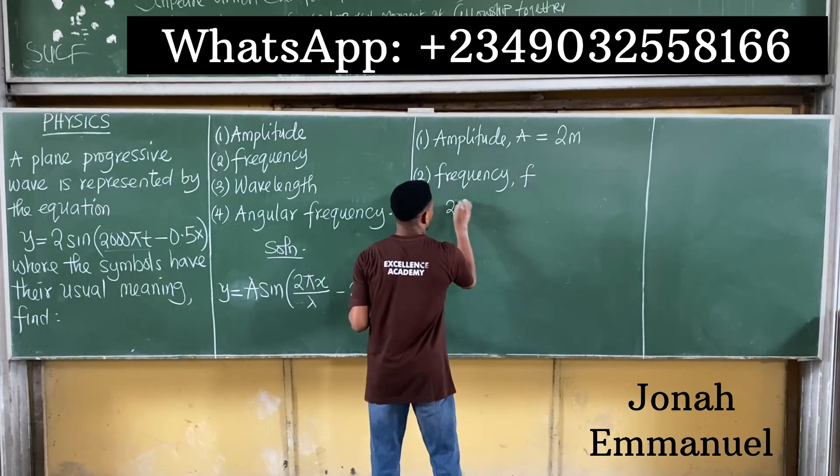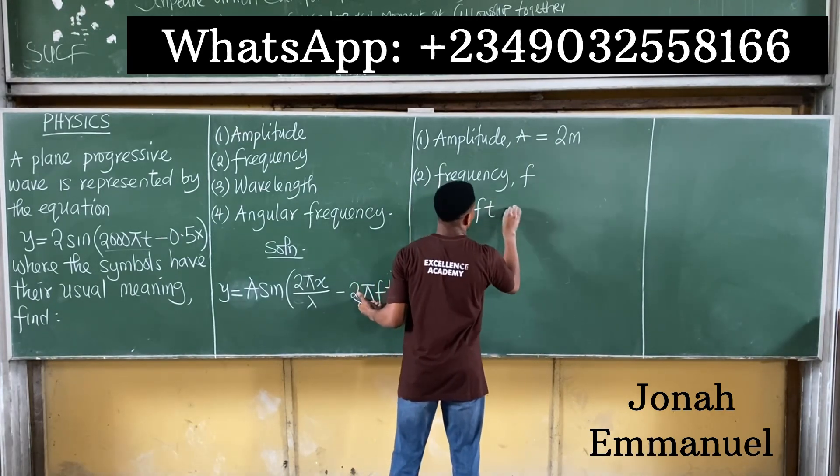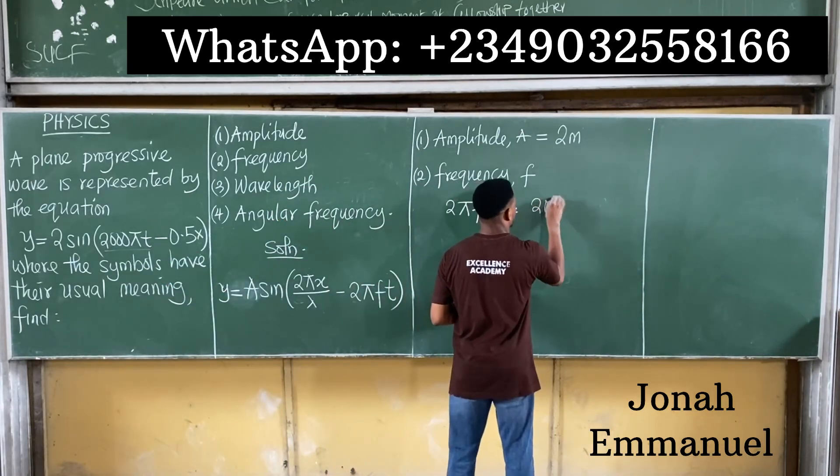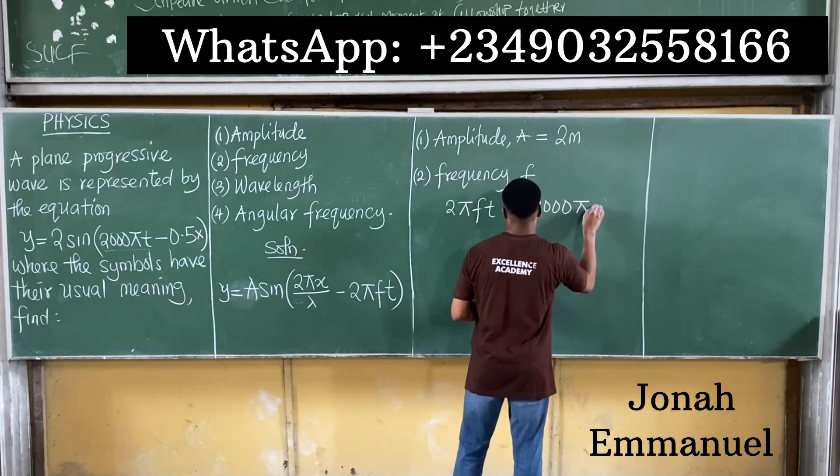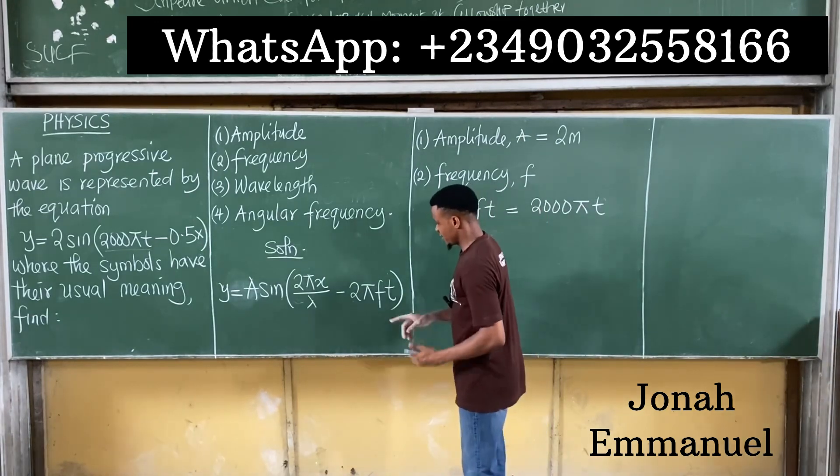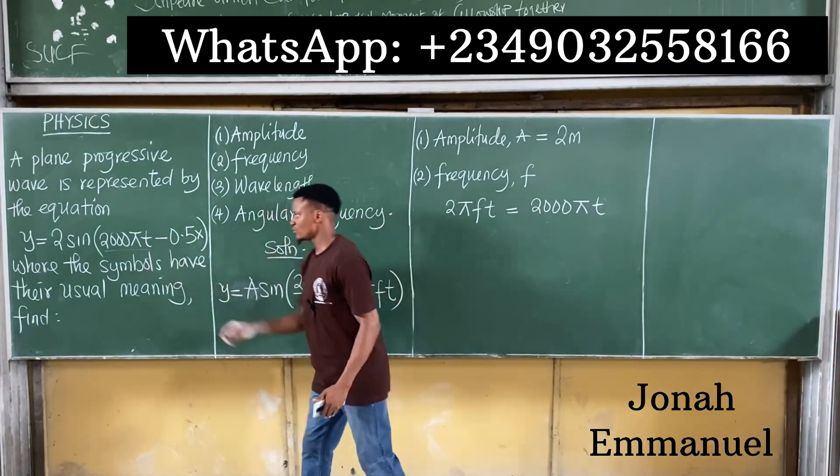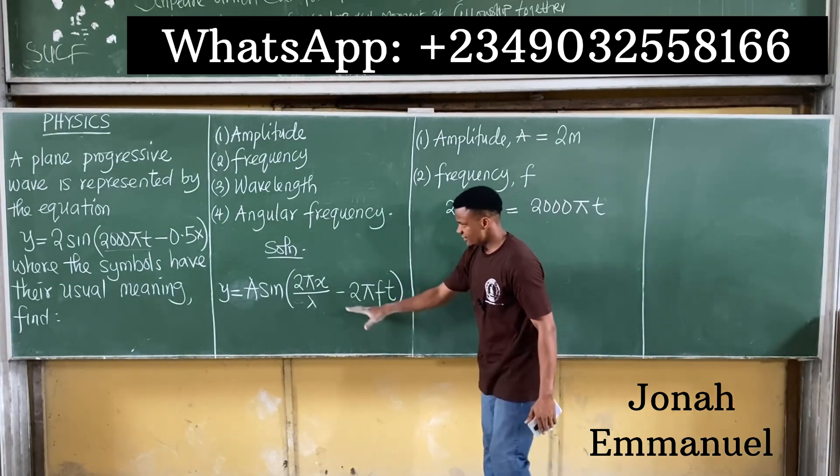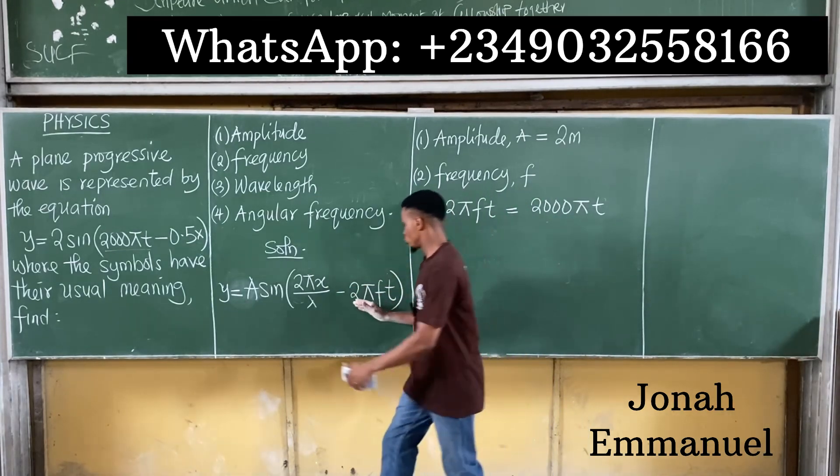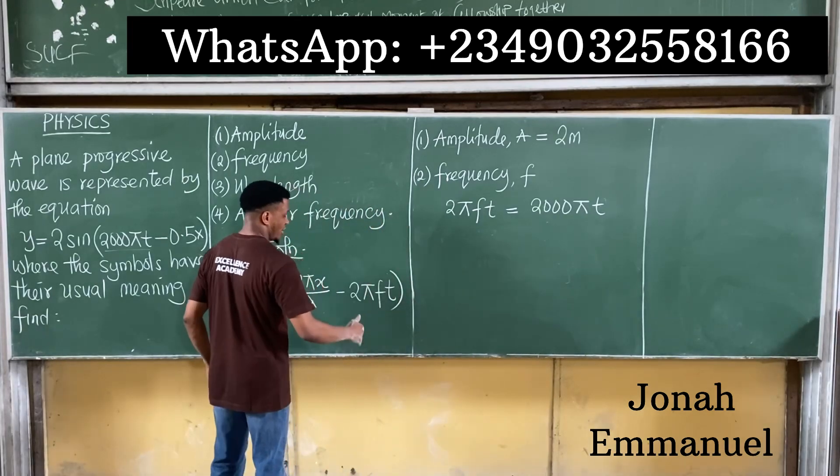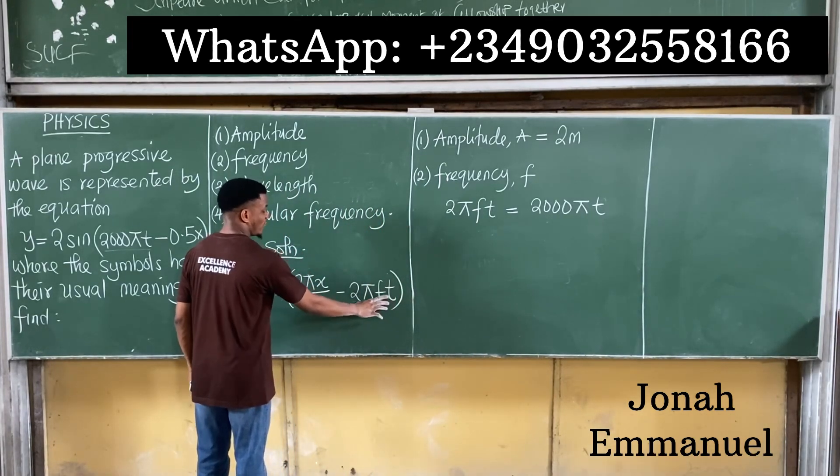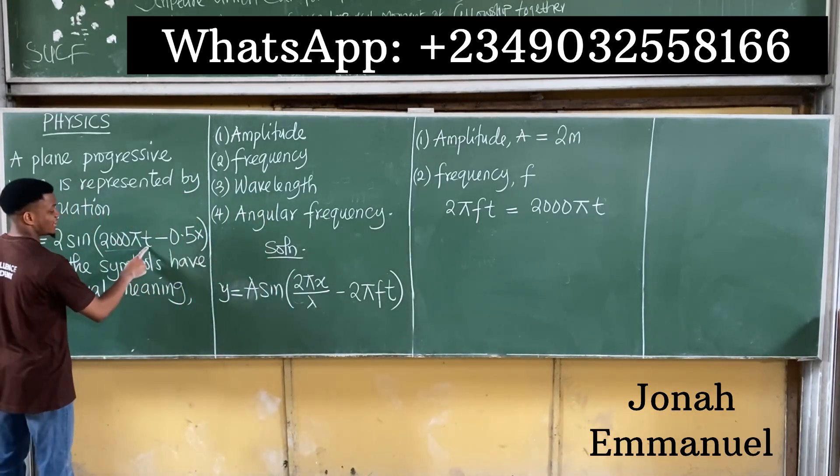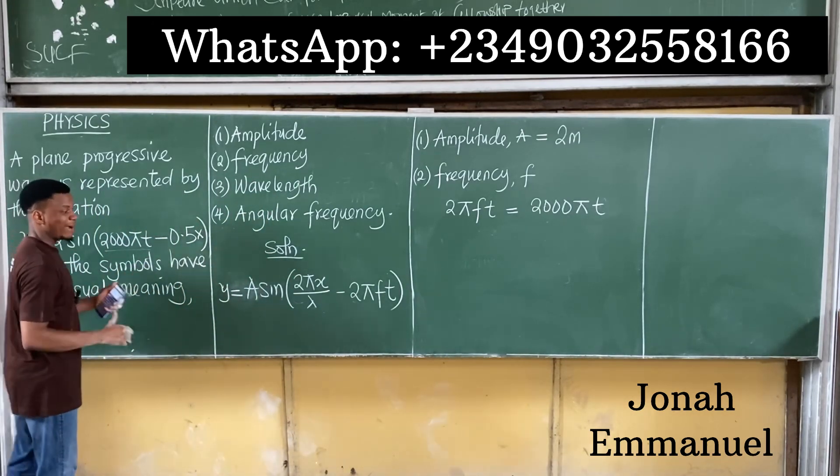So for frequency, you see that this one here, 2πft, is equal to this one here, 2000πt. I'm simply saying this is equal to this because of the presence of the t. Now the question will now be, but in this equation here, this one here is close to the end. It's on my right hand side, and that was after the minus. But in this equation here, the t is appearing before the minus. So why am I equating them?